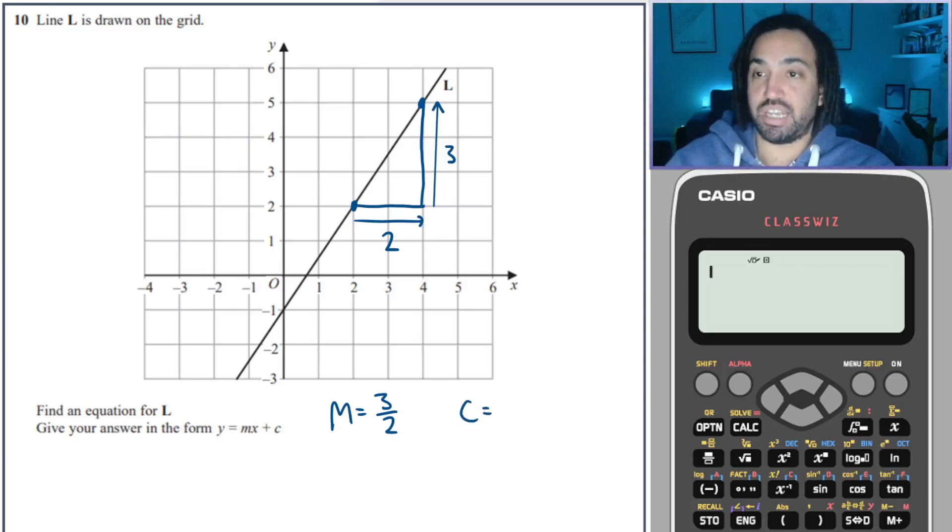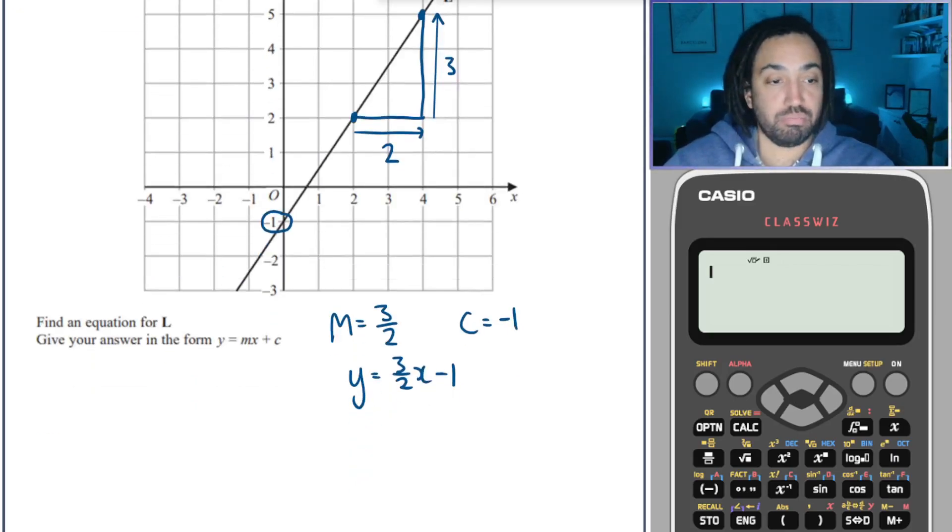So that means that m is equal to the rise over the run, which is 3 over 2. Now what about c? Well, c is again the y-intercept where it crosses the y-axis, and that is at minus 1. So therefore I'm good to go to write y is equal to 3 over 2x minus 1. Perfect. Of course you could say 1.5 as well. Both correct.